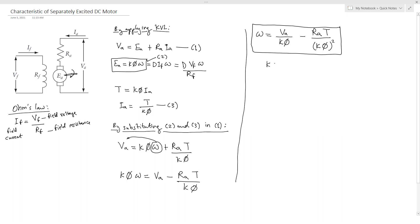We can derive the other equations which are used in some references. We said that K Phi equals D IF. So the other equation will be omega equals VA over D IF minus RA T over D IF squared. And by the way, this one is used by Multisim.